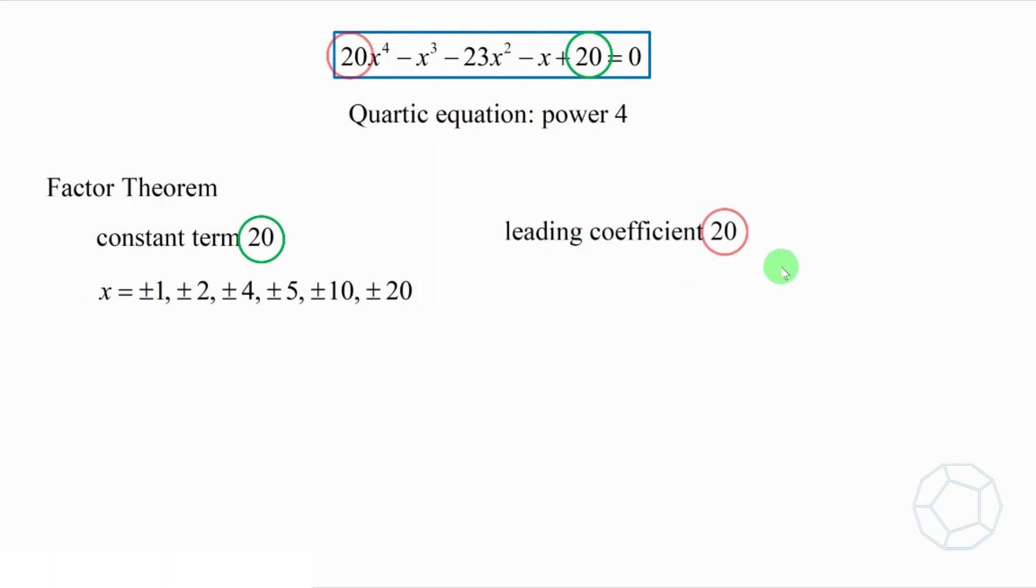For the leading coefficient 20, we try the rational roots, which are simply fractions. That means we have 1, 2, 4, 5, 10, and 20 as the denominators of fractions.